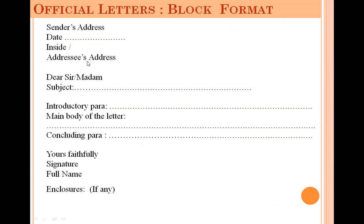In the inside address, first write the designation of the addressee — that is, state who you are writing to. Then write the official address of that addressee. After that, write the salutation. In official letters, use 'Dear Sir,' 'Dear Ma'am,' or simply 'Sir' or 'Ma'am.' If writing 'Ma'am' with an apostrophe (M'am), don't write 'MAM' as it could be misread as 'man.'